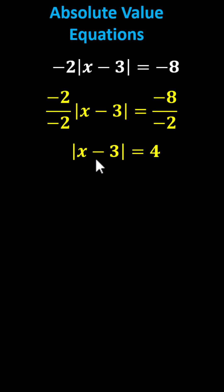Simplifying, we now have the absolute value of the quantity x minus 3 equals 4. We recall the absolute value of a number is the number's distance from 0, and the distance is always positive.